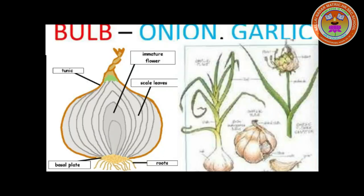The last one is the Bulb. Mainly, fleshy scale leaves are present. The base of the bulb consists of a cluster of adventitious roots. Example: Onion, Garlic. The bulb may be tunicated or scaly. A sheet of dry membranous scale leaves covers the tunicated bulb. A scaly bulb contains no tunic. Example: Onion and Garlic.